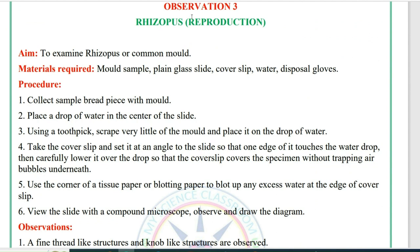The next important experiment from the last five chapters is Rhizopus, from the reproduction chapter. Aim: to examine rhizopus, or common mold. Materials required: mold sample, plain glass slide, cover slip, water, and disposal. Procedure: Collect a bread piece with mold. Place a drop of water in the center of the slide. Using a toothpick, scrape a very little of the mold and place it in the drop of water. Set the cover slip at an angle to the slide so its edge touches the water drop, then carefully lower it so it covers the specimen without trapping air bubbles. Use tissue paper or blotting paper to blot excess water at the edges. View the slide with a compound microscope, observe, and draw the diagram.